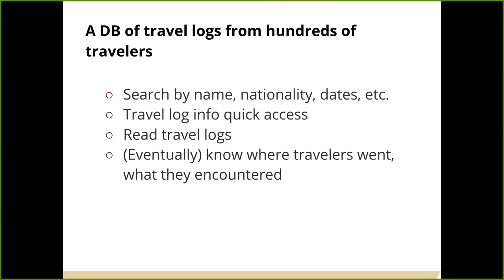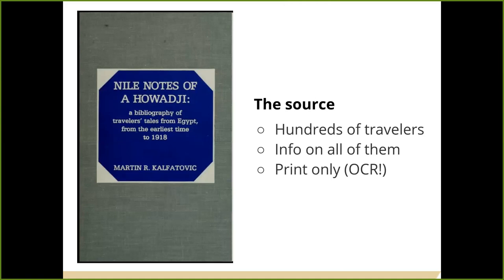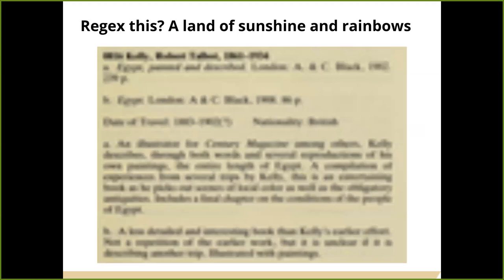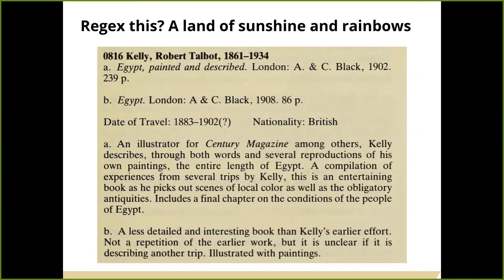We started with 'Nile Notes of a Hawaji,' which contains information on the travelogues of hundreds of travelers who went to Egypt during that time. The one problem is it exists only in print, so you have to scan it and have a computer attempt to read all the text. In a perfect world, the scanned text would look exactly right — showing the traveler, a list of their publications, when they traveled, their nationality, and nice summaries of each publication. In a perfect world you could just apply a regular expression and put it in a database, but unfortunately the reality of OCR text is not so clean.